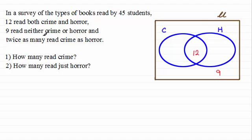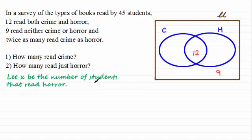And then we've got twice as many read crime as horror. And that doesn't allow me really to fill in this region or this region. So what I need to do is introduce x into this. And I'm going to define x as being, let x be the number of students that read horror. So I can say then that the number of students in this set of H is x. So that means the number in the set for crime must be twice as much. So we'll call that then 2x. So I can write each of these two regions in terms of x. This one here must be 2x minus 12. And this region must be x minus 12.